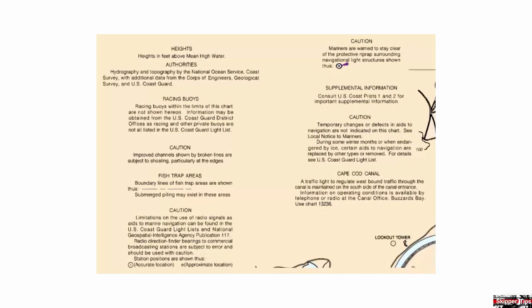Look in the non-navigable portion of a chart to find chart notes. Chart notes give important navigational information for sailing safety. Here you can see on this chart: heights are in feet above mean high water; racing buoys within the limits of this chart are not shown; fish trap areas are shown with a chart symbol of magenta dashes, and you may find submerged pilings in these areas.